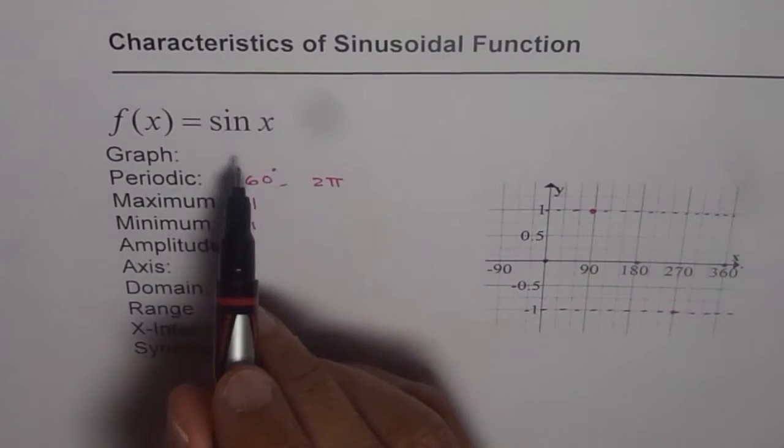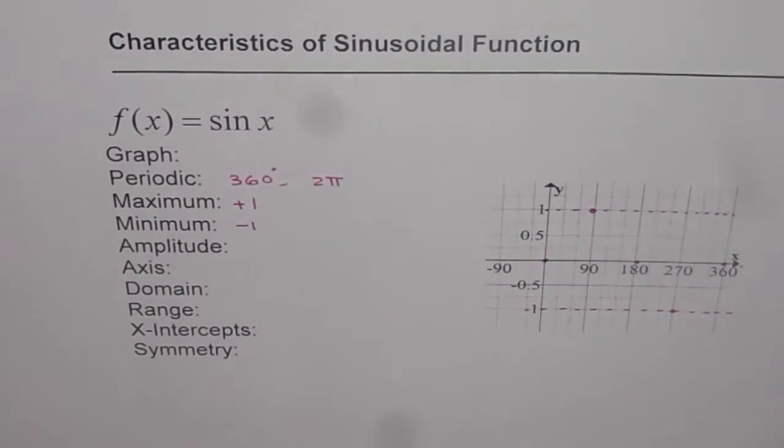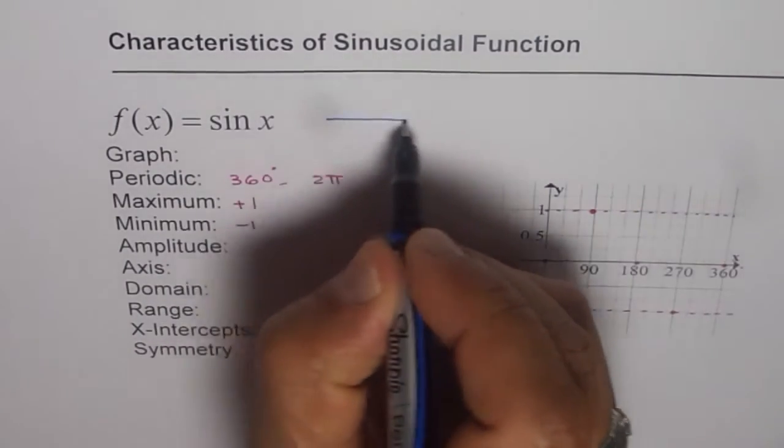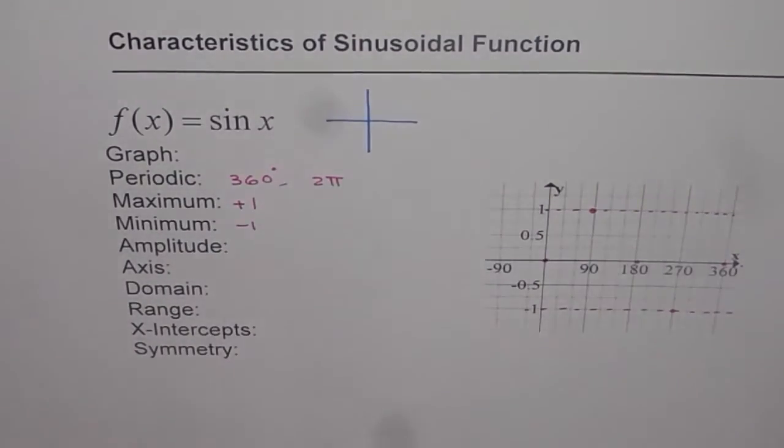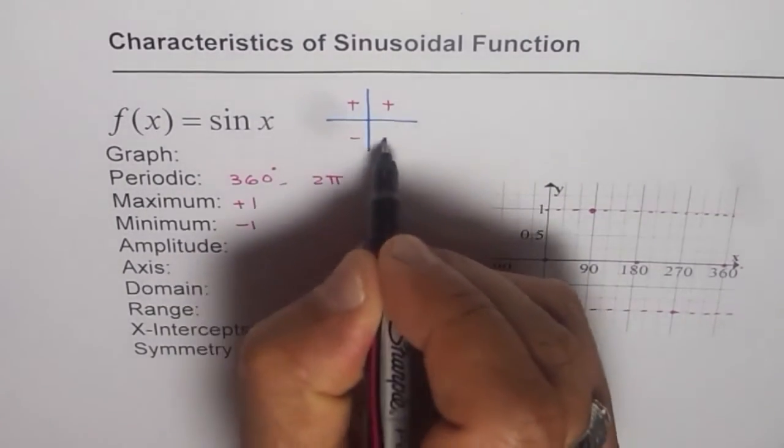To draw sin x you can use these concepts. If you have a coordinate system then you know sin is positive in these two coordinates and is negative in these two.